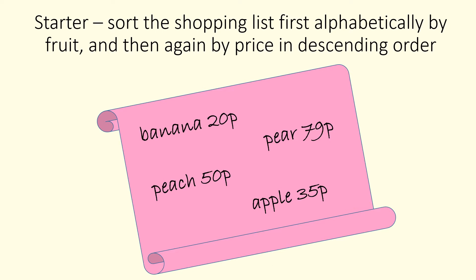For your starter, you should have your task sheet three opened up in front of you. I want you to sort the shopping list first alphabetically by fruit and then again by price in descending order. You can pause this video and on your task sheet there's space for you to write your answers, so I want the fruit listed alphabetically and then the price listed beside it in descending order.